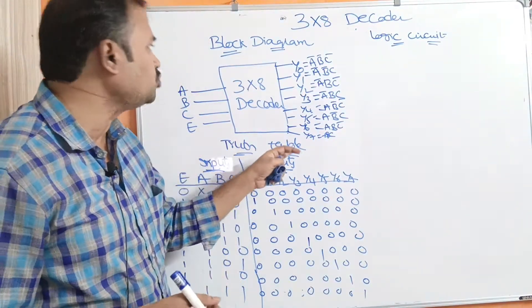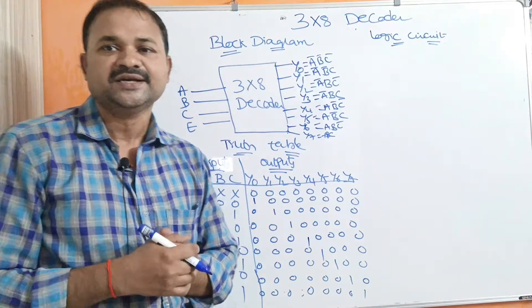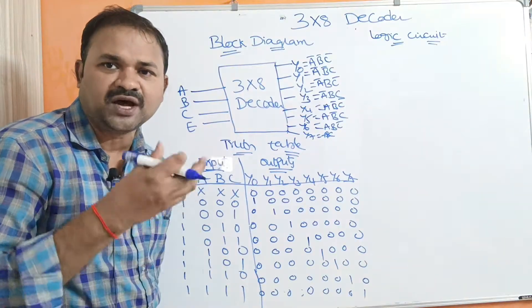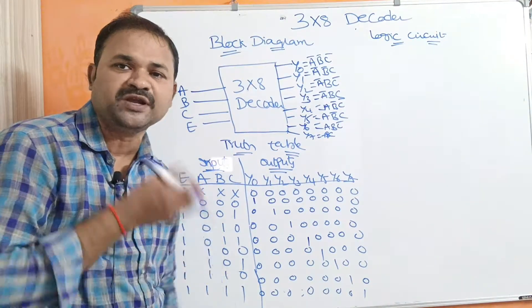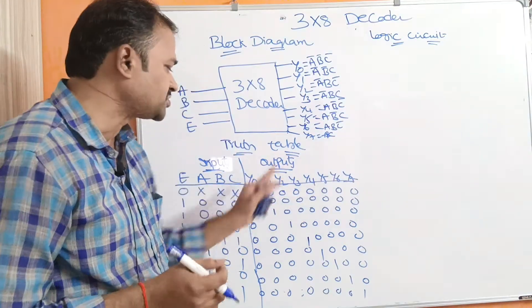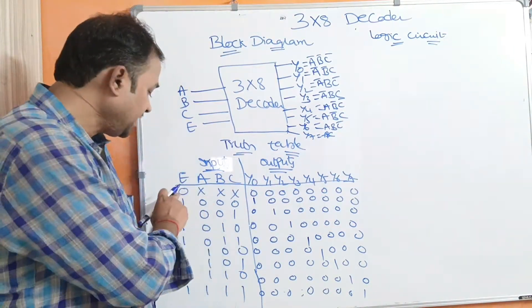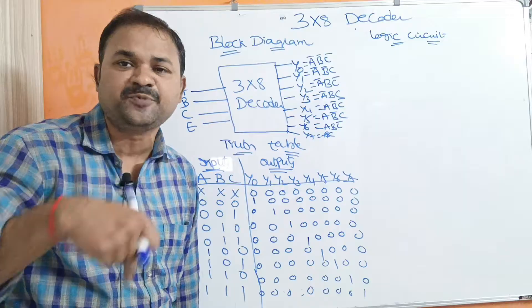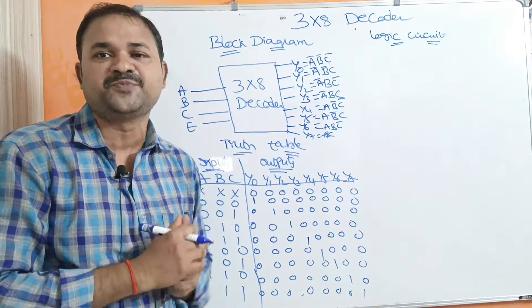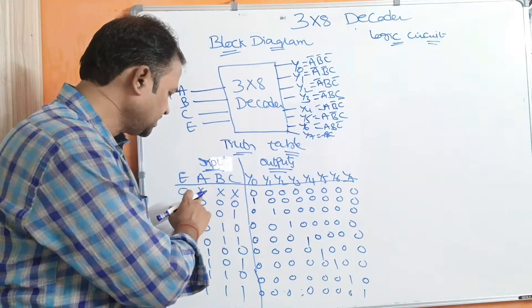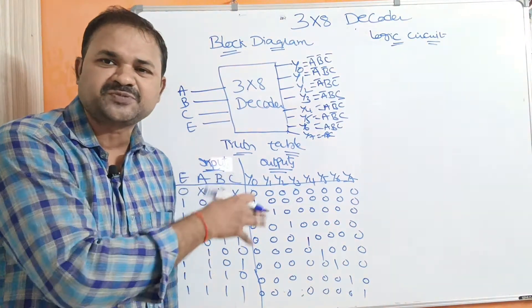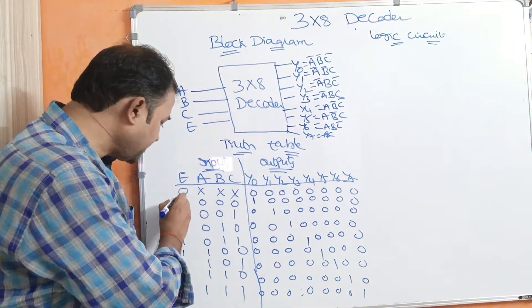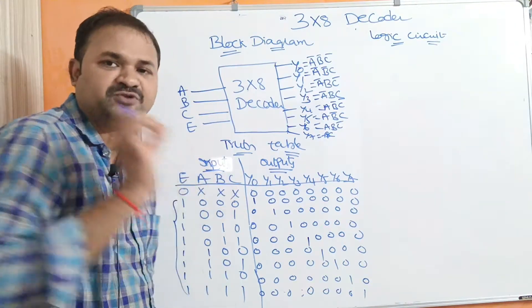Next let us see the truth table for the 3x8 decoder. Here we have three inputs A, B, C. In addition to the three inputs we have E, the enable input, and it produces eight outputs from Y0 to Y7. If the enable input is low, that means if the enable input is zero, then irrespective of the inputs it doesn't produce any outputs. Here x means don't care — the inputs may be either zero or one but it doesn't produce any outputs. Next, if the enable input is one then only it produces the output.